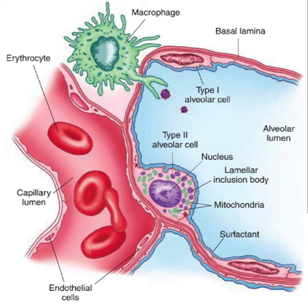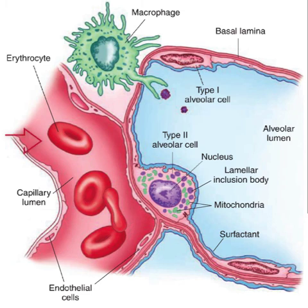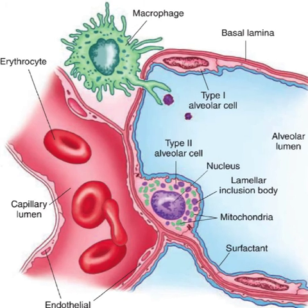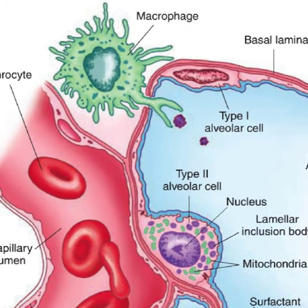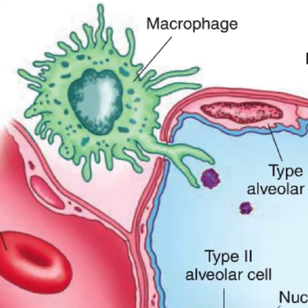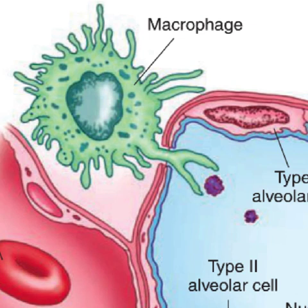The other cells we see here are the capillary endothelial cells that line the blood vessels, and also erythrocytes — the red blood cells — and the alveolar macrophages. The alveolar macrophages are part of the immune system and help by engulfing bacteria that might escape into the alveoli.